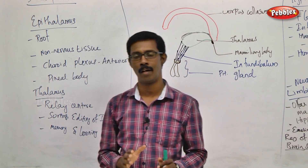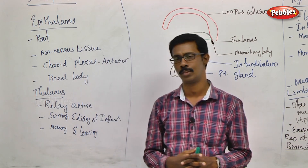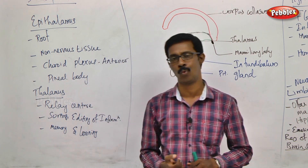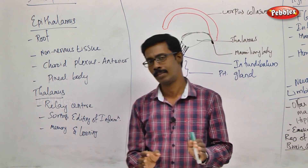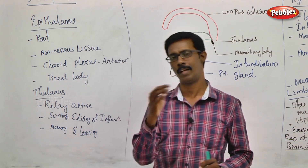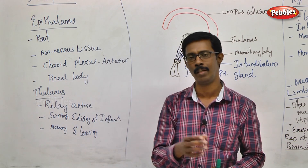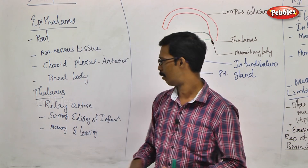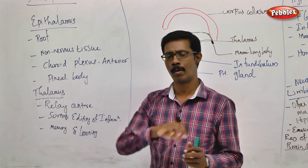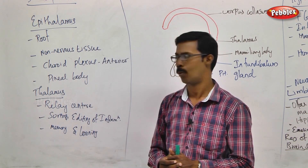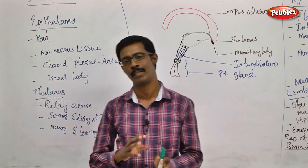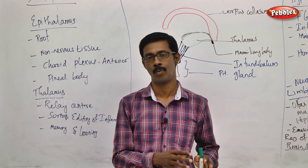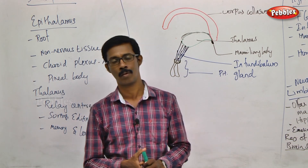Epithalamus is non-nervous tissue — it is not made up of neurons or nervous tissue. It is not made up of vascular tissue either, along with other accessory cells. In that region, we call it the Choroid Plexus. Choroid Plexus is actually of two types: one is Anterior Choroid Plexus and one is Posterior Choroid Plexus.